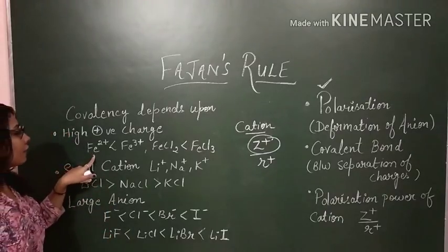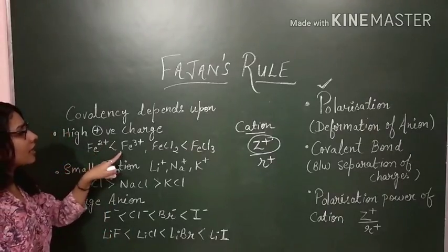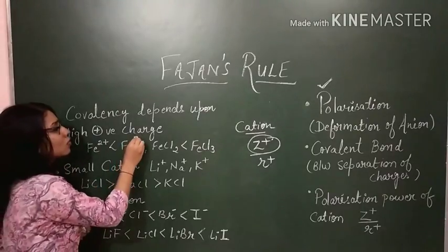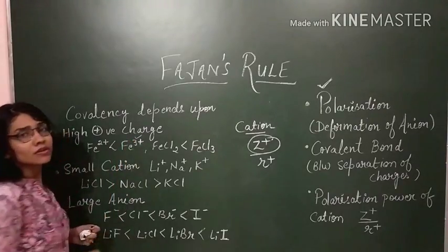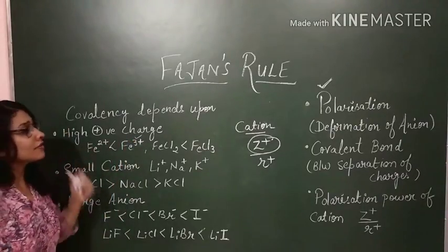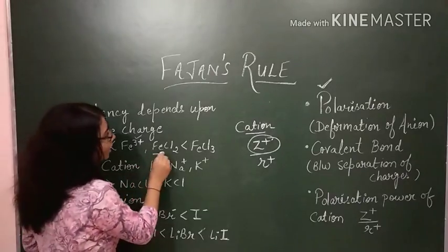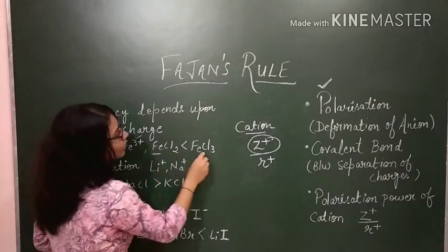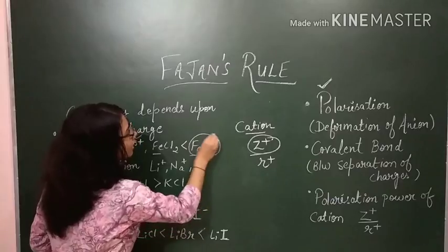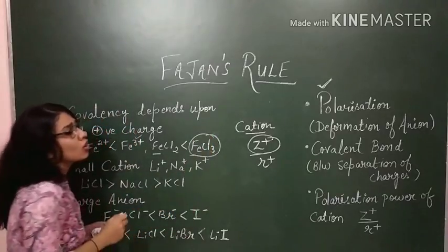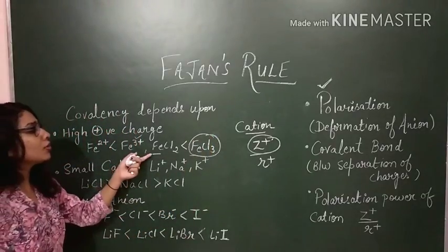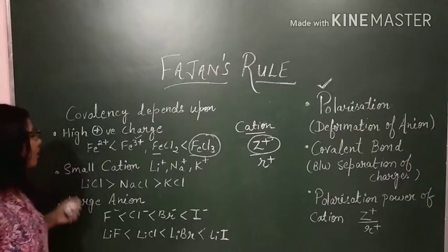For example, comparing Fe²⁺ and Fe³⁺: since Fe³⁺ has more positive charge, FeCl₃ will have more covalent character compared to FeCl₂.